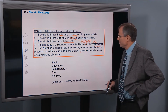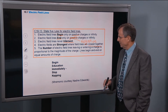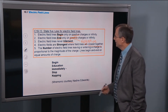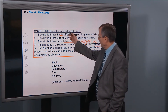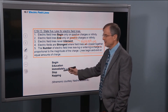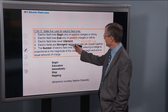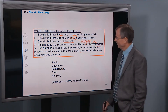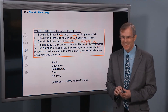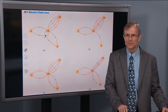For a mnemonic for these five rules, my wife came up with this one: 'Begin education immediately, stop napping.' However you want to remember them — those are the five rules.